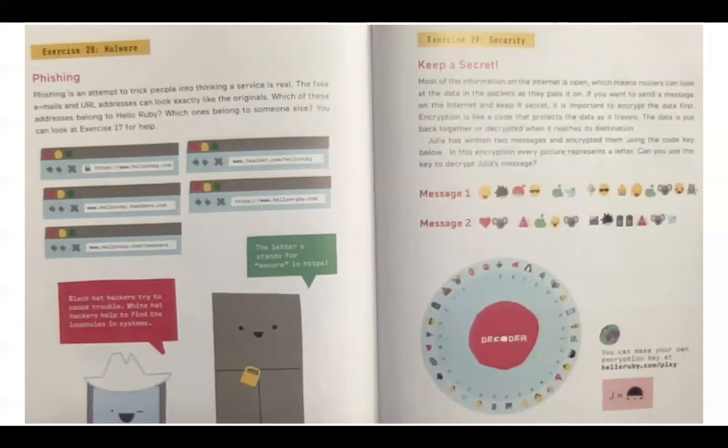Exercise 29. Security. Keep a secret. Most of the information on the internet is open. Which means routers can look at the data in the packets as they pass it on. If you want to send a message on the internet and keep it a secret, it is important to encrypt the data first. Encryption is like a code that protects the data as it travels. The data is put back together or decrypted when it reaches its destination.